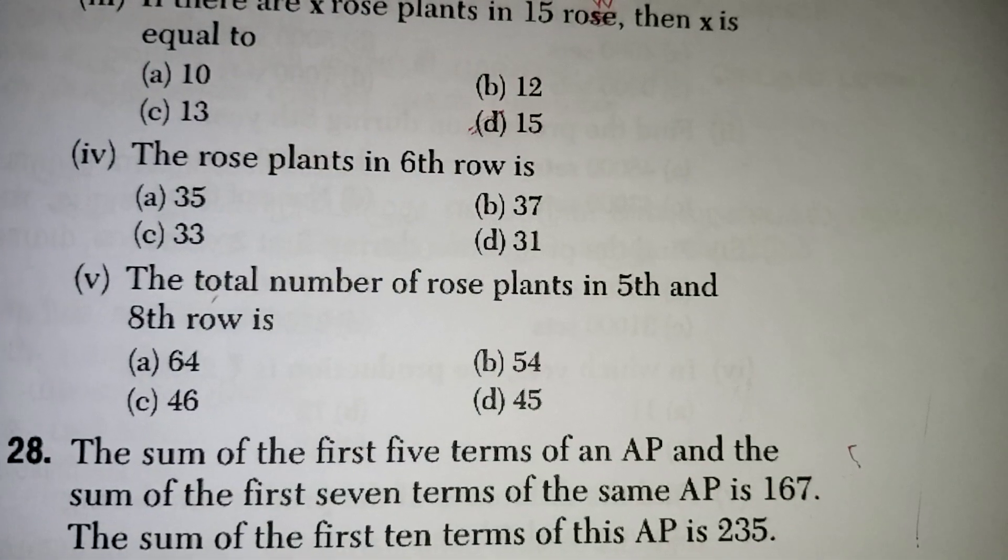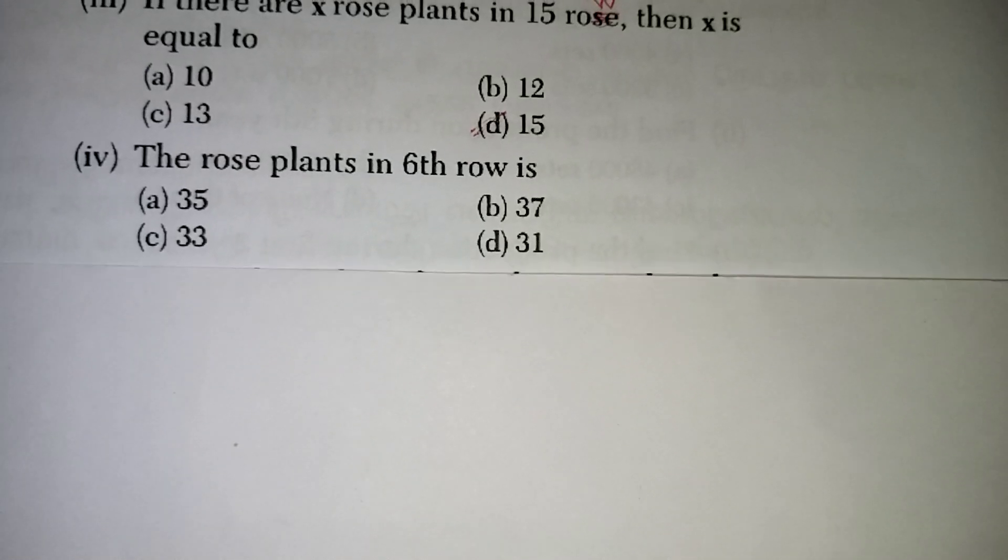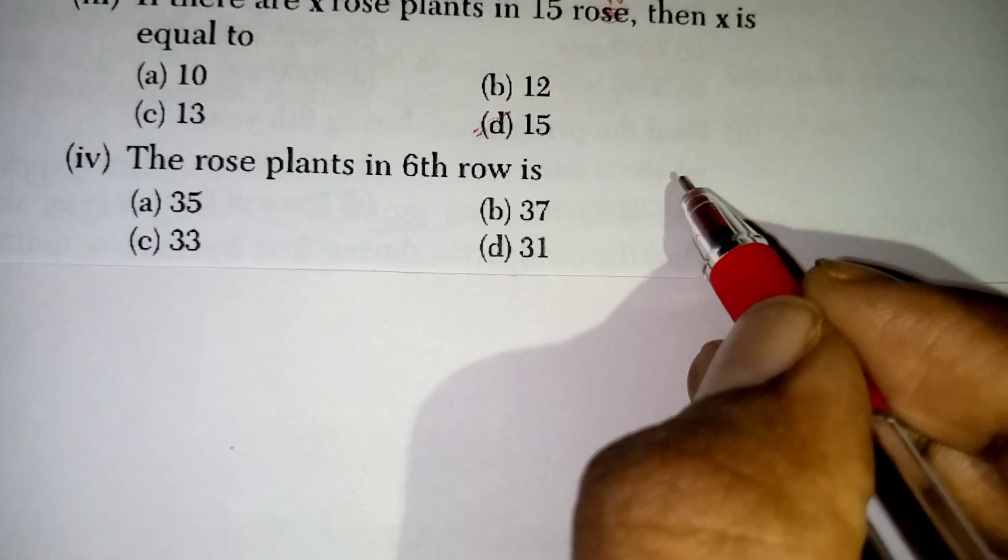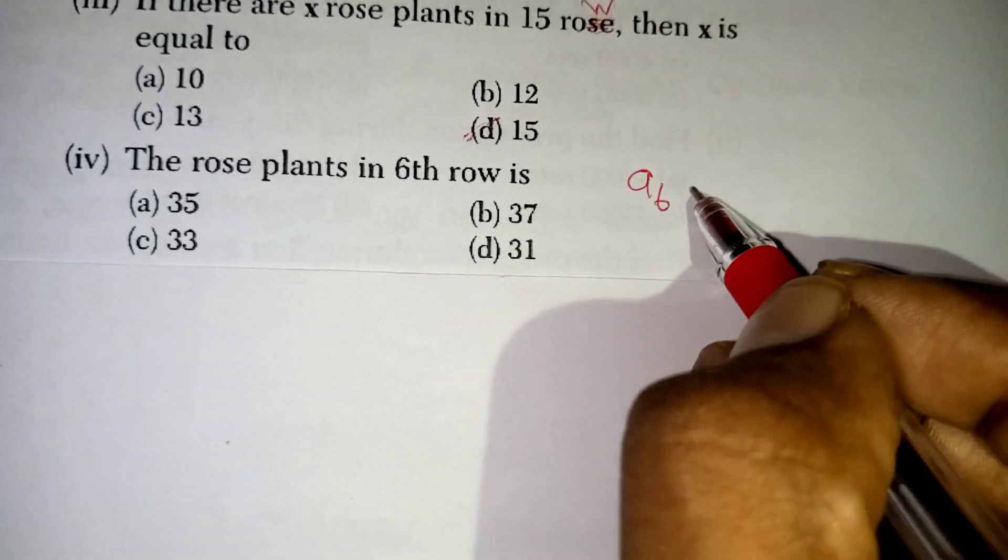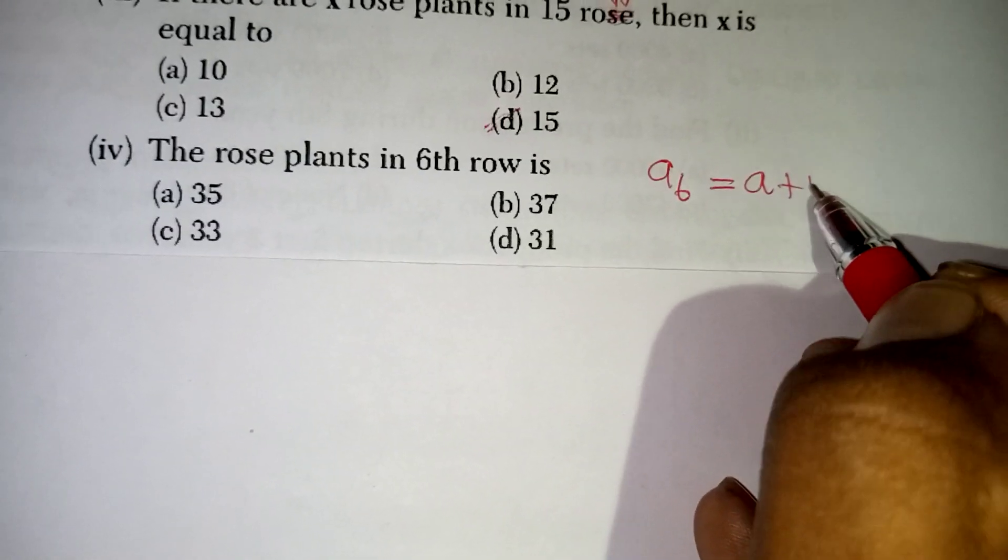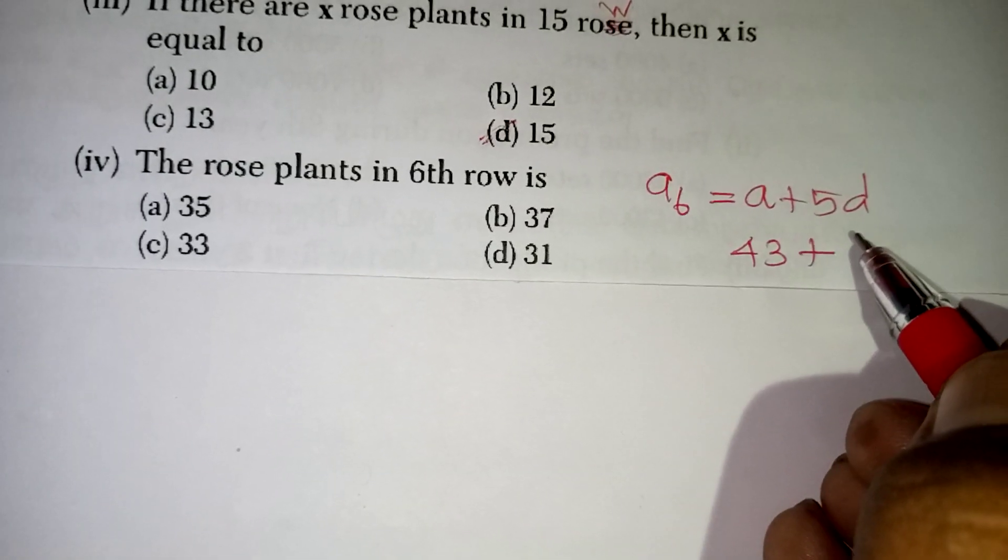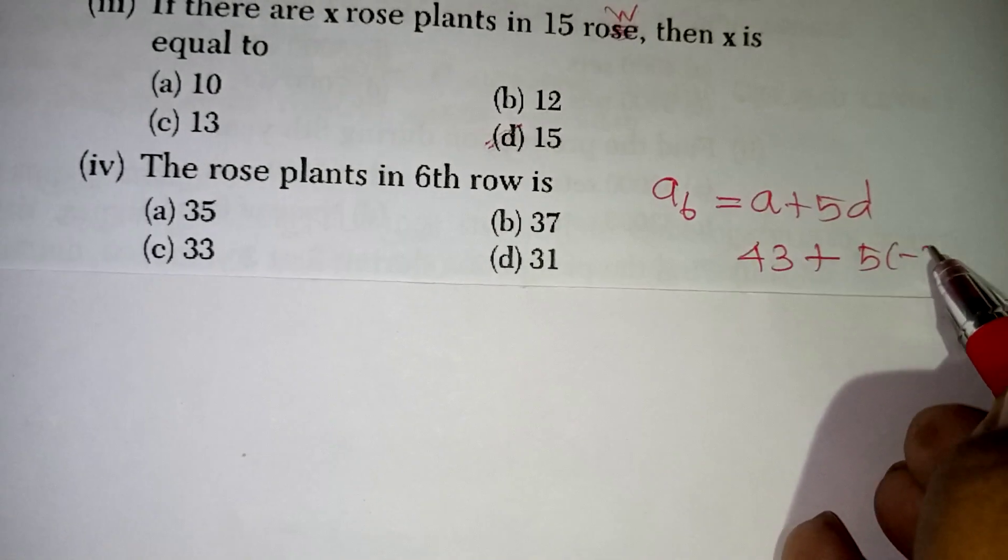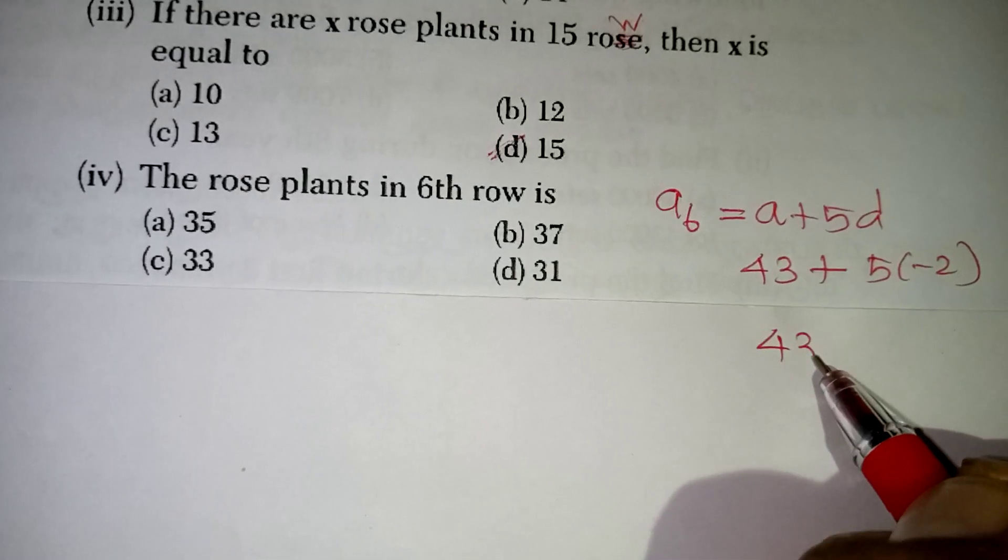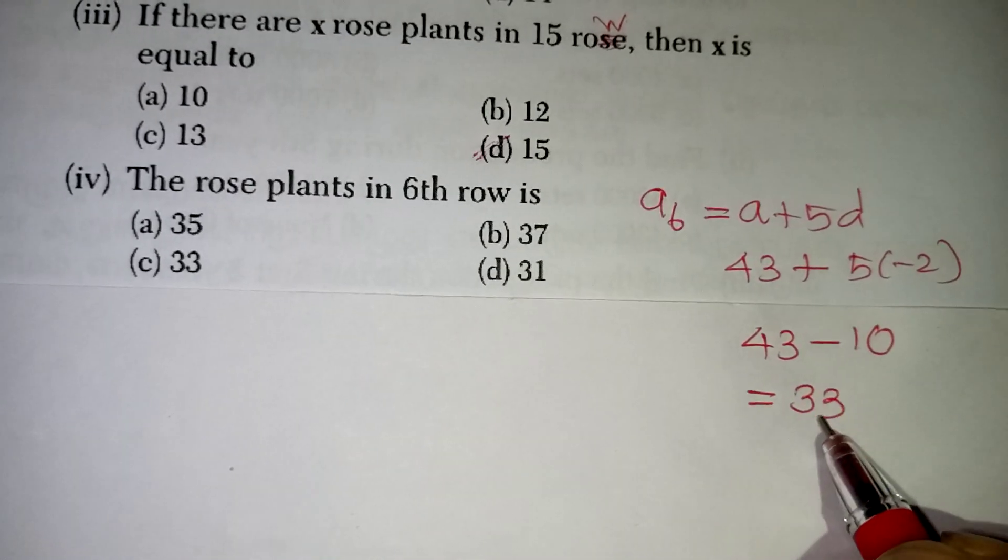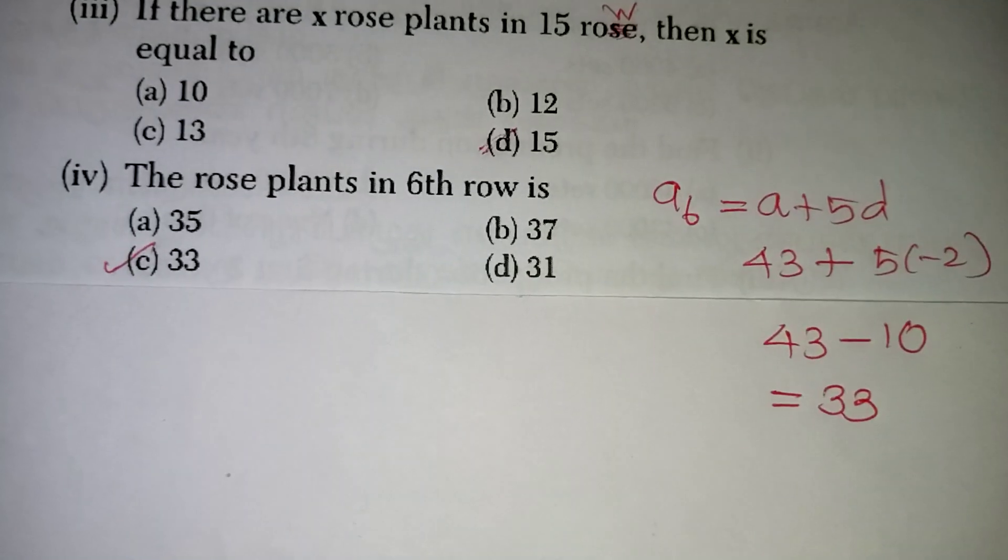We will move on to the next question now. The rose plants in the 6th row they are asking. So 6th row is nothing but A6. A6 is equal to A plus 5D. A value 43 from the question, D value minus 2 from the question. So 43 minus 10 will give you 33. So that is your correct answer, C option.